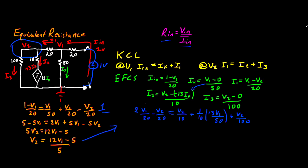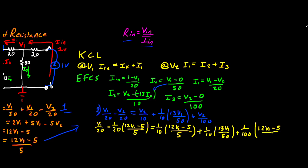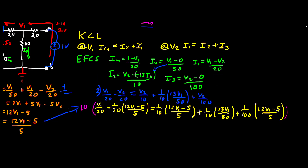So now let's take that value of V2 and plug it into our equation number 2 over here. So doing that, it's going to give us V1 divided by 20 minus 1 over 20 multiplied by 12V1 minus 5 divided by 5 plus 1 over 10 times 13V1 divided by 50 plus 1 over 100 multiplied by 12V1 minus 5 divided by 5. So now let's take this whole thing, and let's multiply this by 100, so that way we can clean it up a little bit. And what that's going to look like is 5V1 minus 12V1 plus 5 is equal to 24V1 minus 10 plus 13V1 divided by 5 plus 12V1 divided by 5 minus 1.